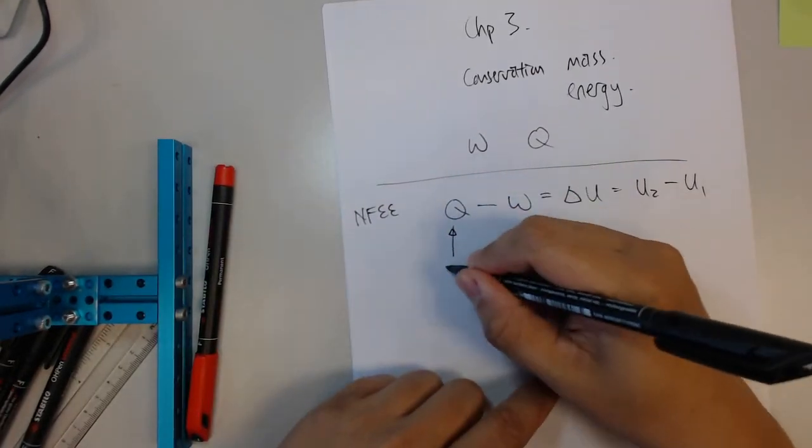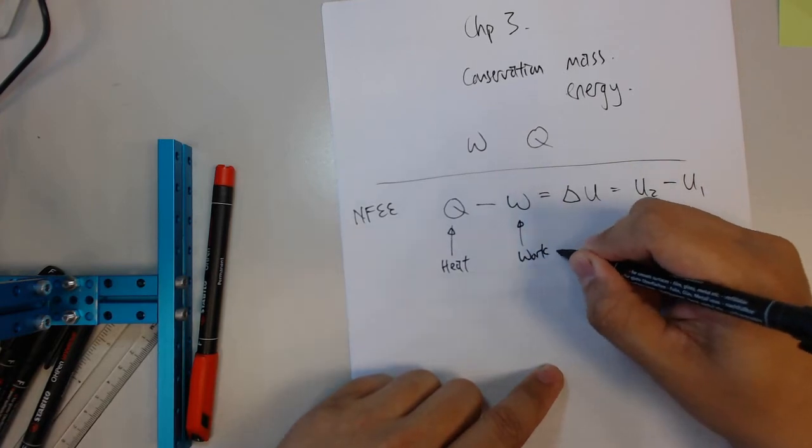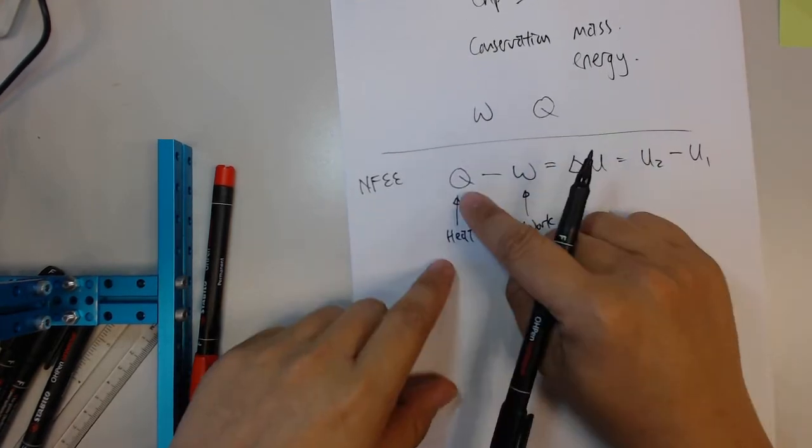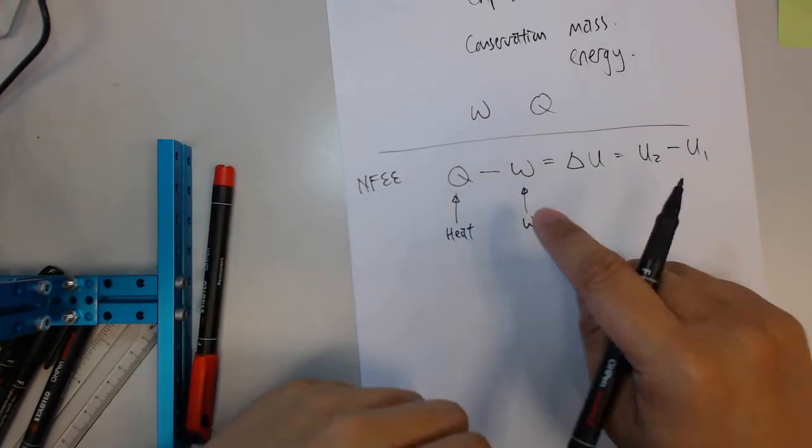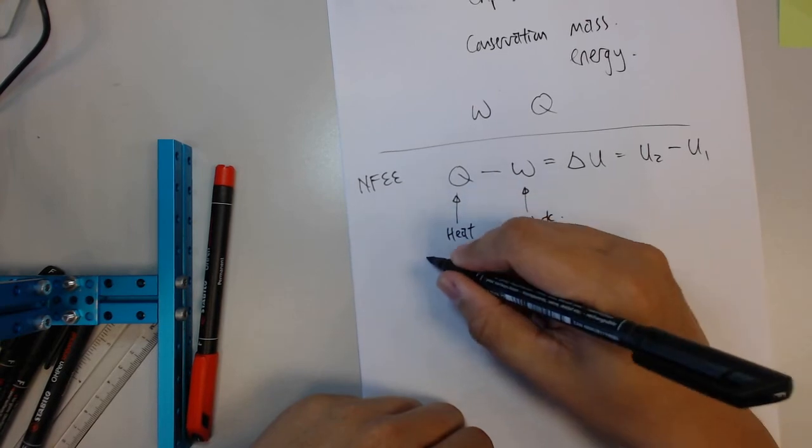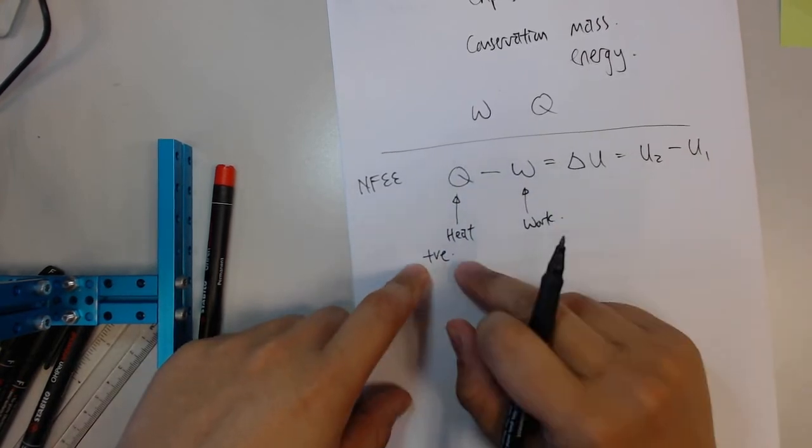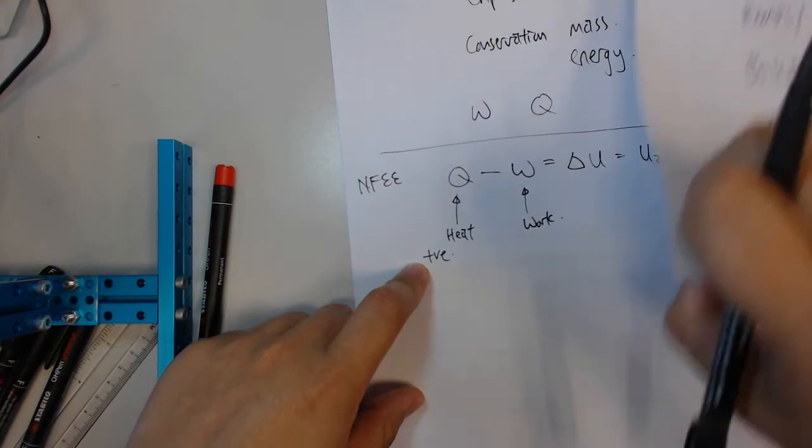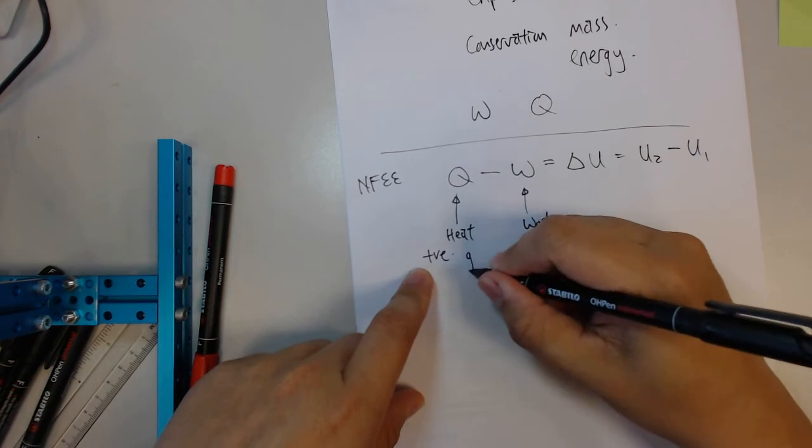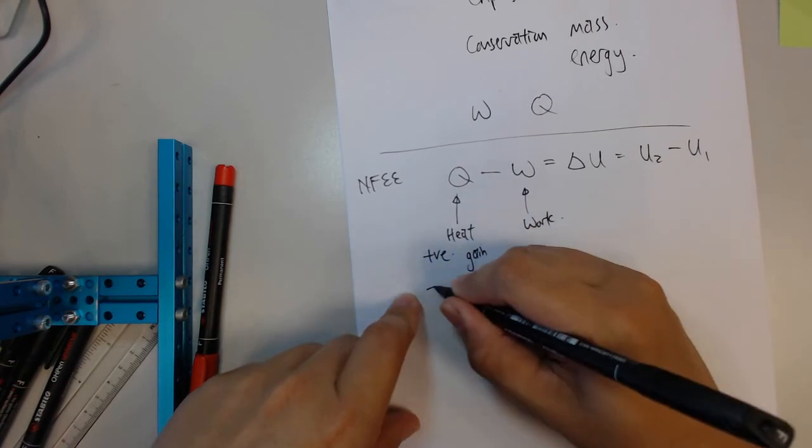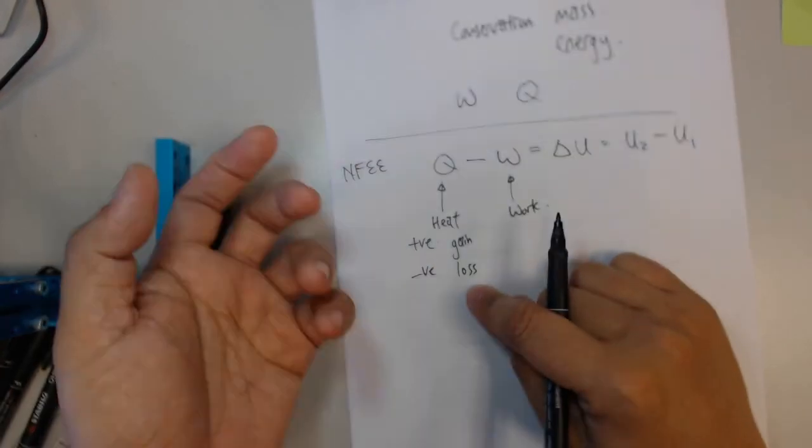So what it says is this: from your internal energy at the final minus the internal energy at the initial, this change in internal energy is accounted for by the heat and the work done into the system or into the fluid. So this is heat, and this is work.